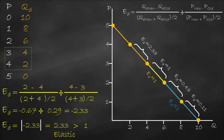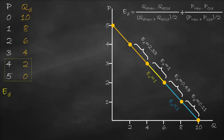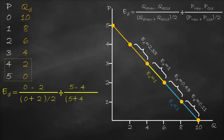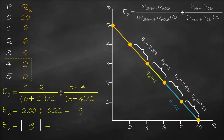For price increasing from 4 to 5, new quantity demanded is 0 minus 2, divided by its average (0 plus 2) divided by 2, divided by new price 5 minus 4, divided by the average (5 plus 4) divided by 2. This gives us negative 2 divided by 0.22, which equals negative 9. Using absolute value gives us 9. Since 9 is greater than 1, demand is elastic between prices 4 and 5. Therefore, between prices 3 and 5 demand is relatively elastic.